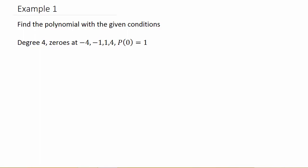In this video we're going to learn how to find the function of a polynomial given the zeros and a given condition. I'll have four examples and I'm going to do one example per video. You may want to check out the other examples because they're all going to be a little bit different.